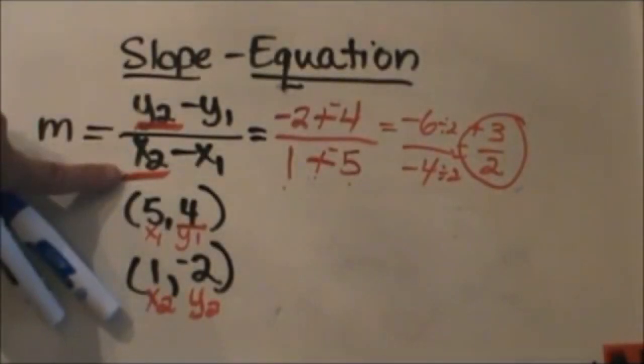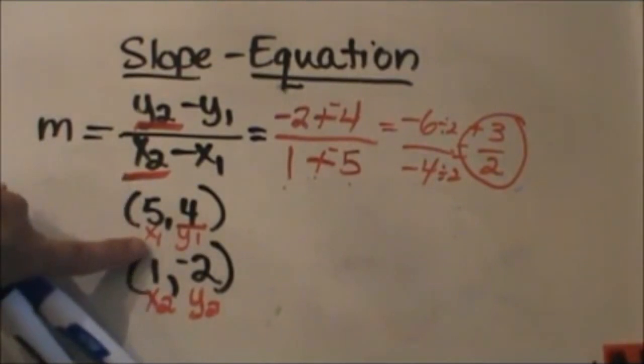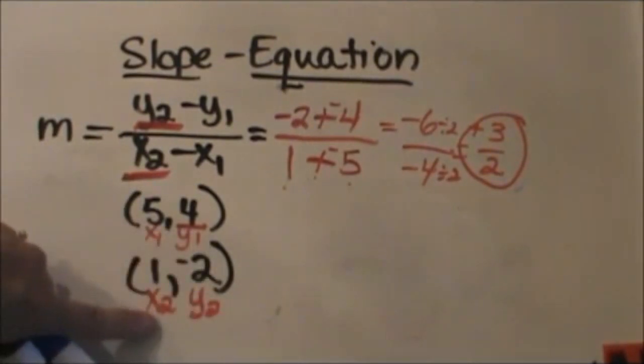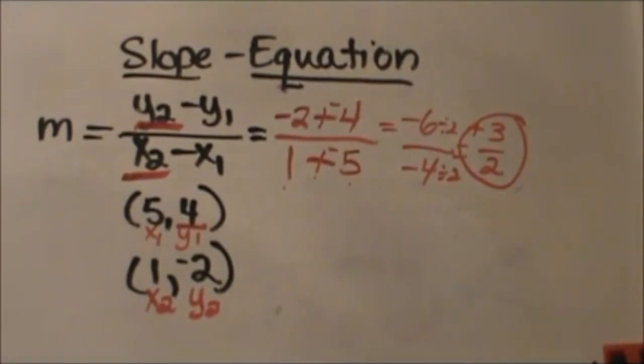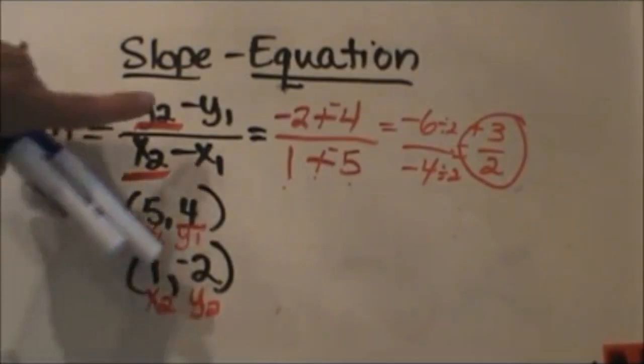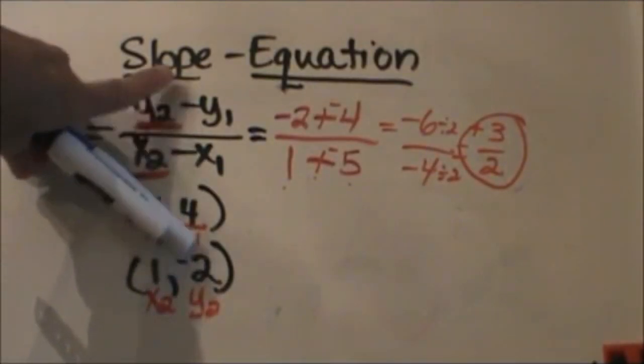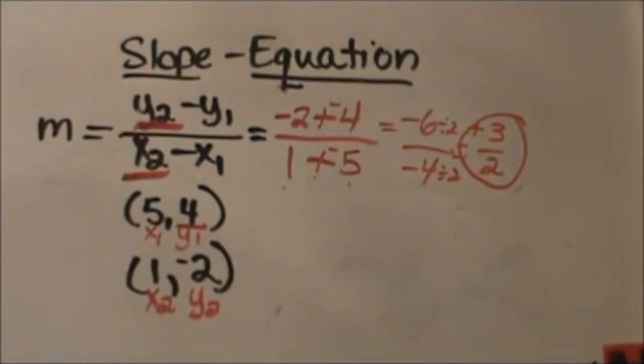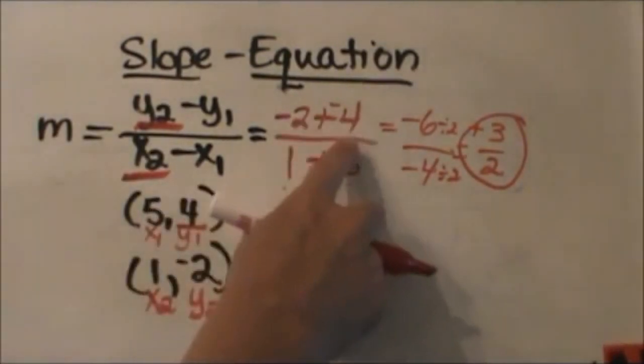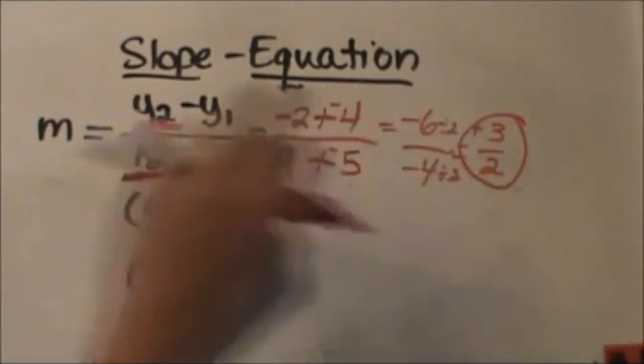First you write your equation. Then you label your coordinates x1, y1, x2, y2 and then you just plug it into the equation in those spots. You have to be a little bit careful with your signs because slope is finding the difference between the x and the y coordinates so you are subtracting. So you subtract and I rewrote those as addition, simplified it and reduced it.